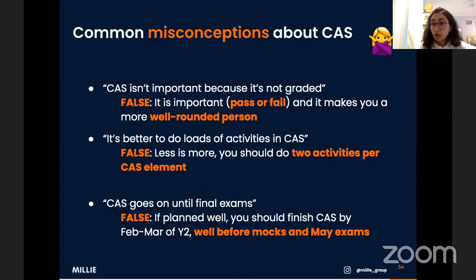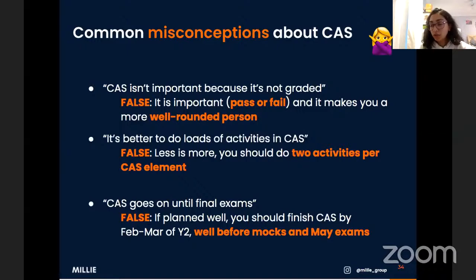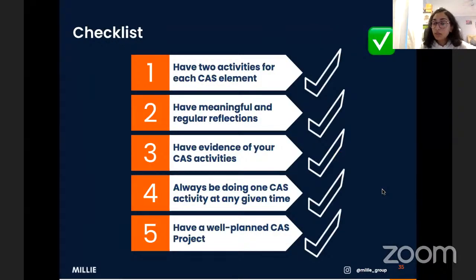Sixth misconception: CAS goes on until final exams. If you plan your timeline well, it will not — you should finish by around February, March, or April of your second IB year, well before mocks and May exams. However, if you haven't planned well, haven't done your CAS project, or have missing evidence and reflections, your supervisor will force you to continue during revision time. If you then fail CAS, you fail the IB regardless of your exam performance. So plan it well and finish on time.